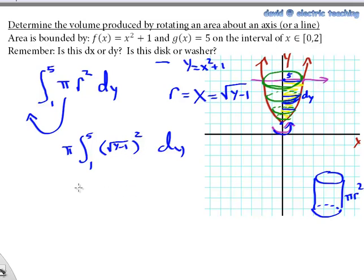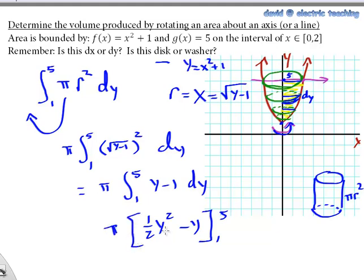All right, let's just finish off the problem now. We've got π on the outside. We've got to clean up this integration just a little bit. We've got 1 to 5. The square of the square root leaves y - 1. We now want to integrate, so we've got ½y² - y running this from 1 to 5 with a multiplier of π on the outside.